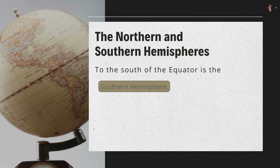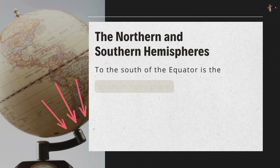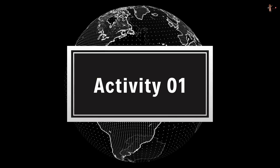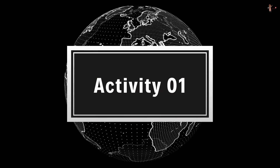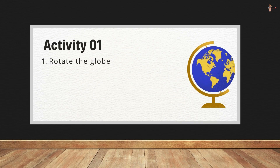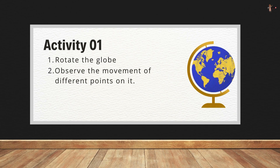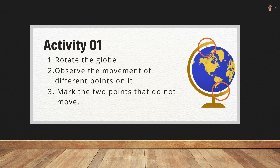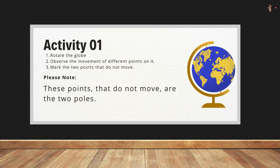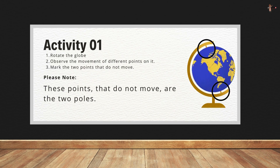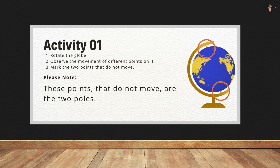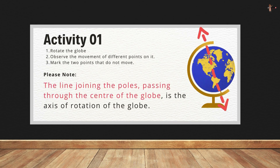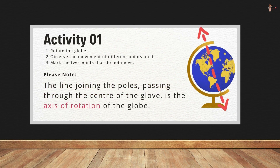Now get your globes — we will do an activity. First, rotate the globe and observe the movement of different points on it. Now mark the two points that do not move. These points that do not move are the two poles, and the line joining the poles passing through the center of the globe is the axis of rotation of the globe.